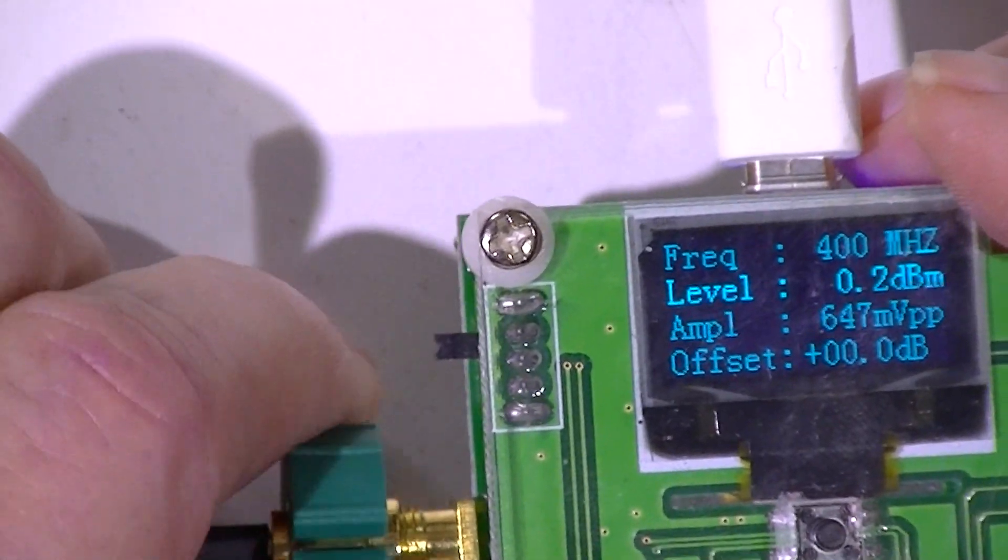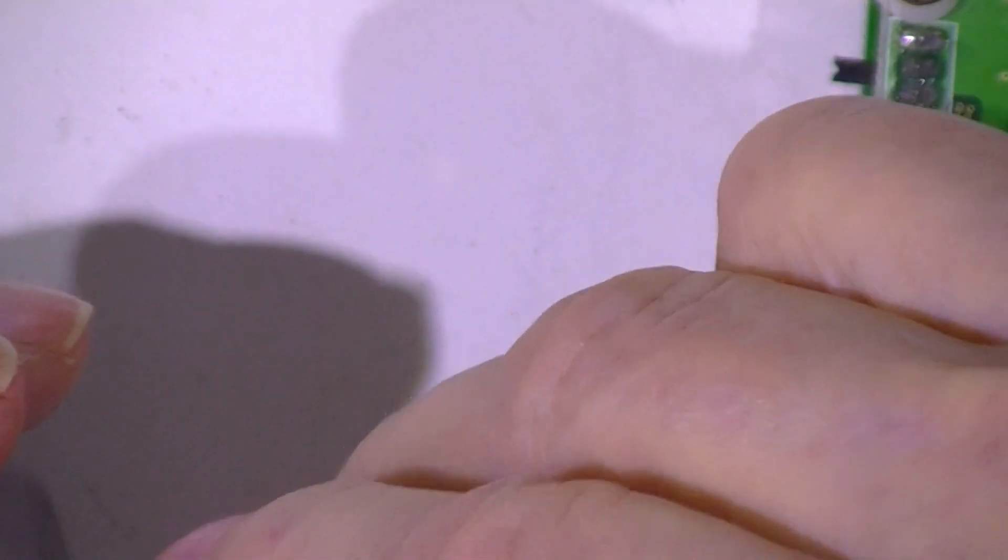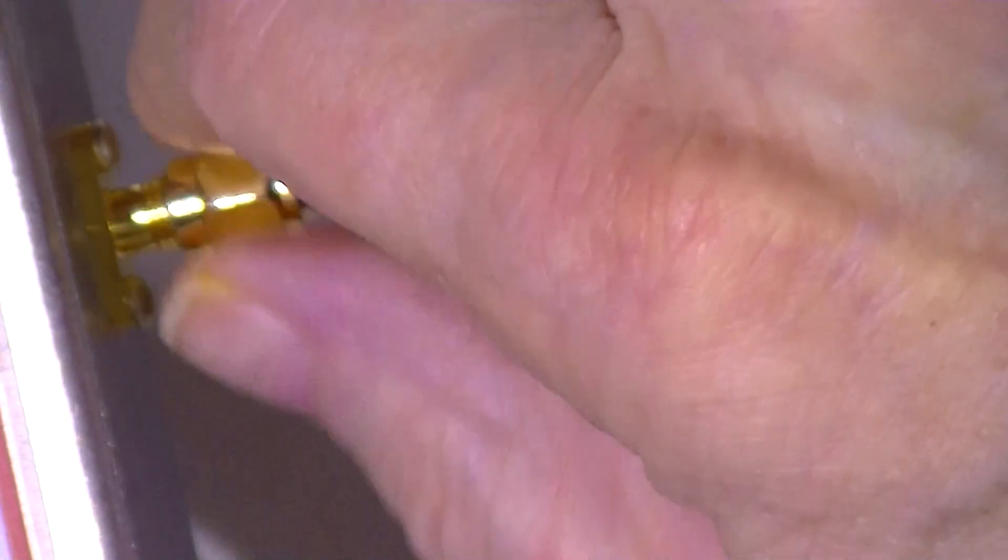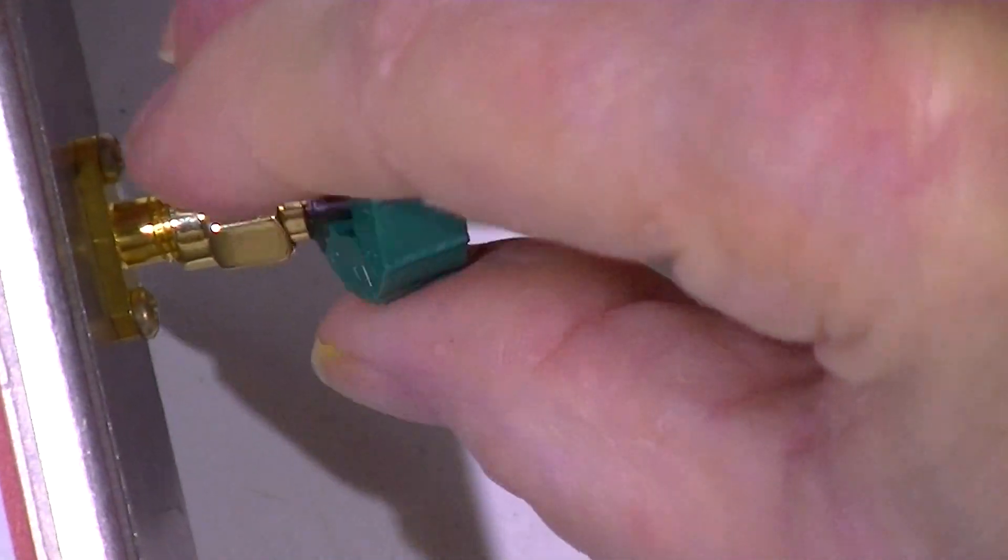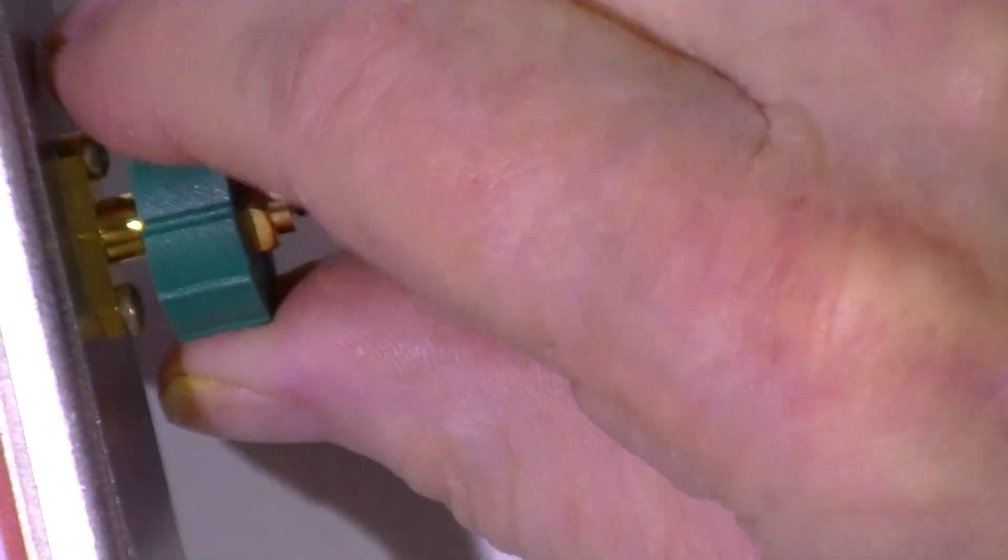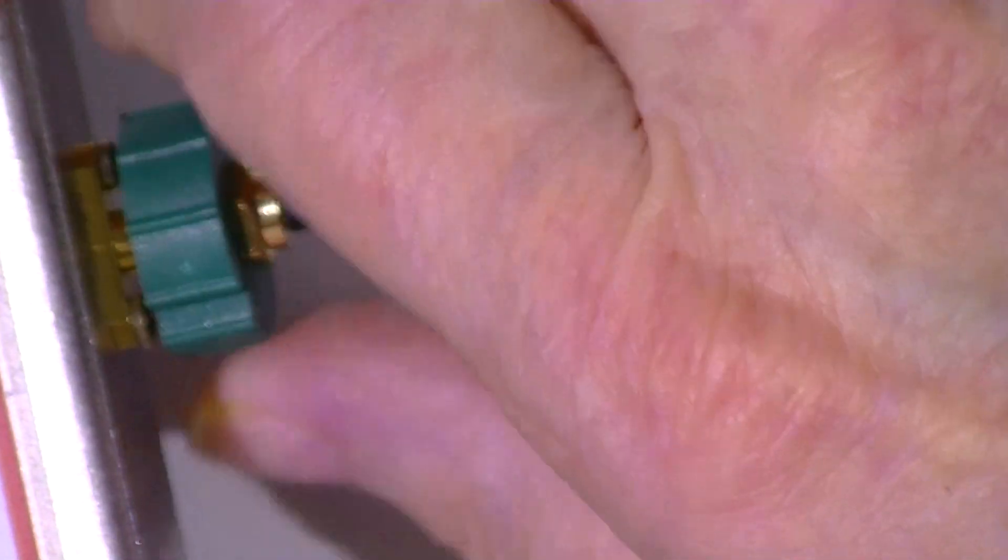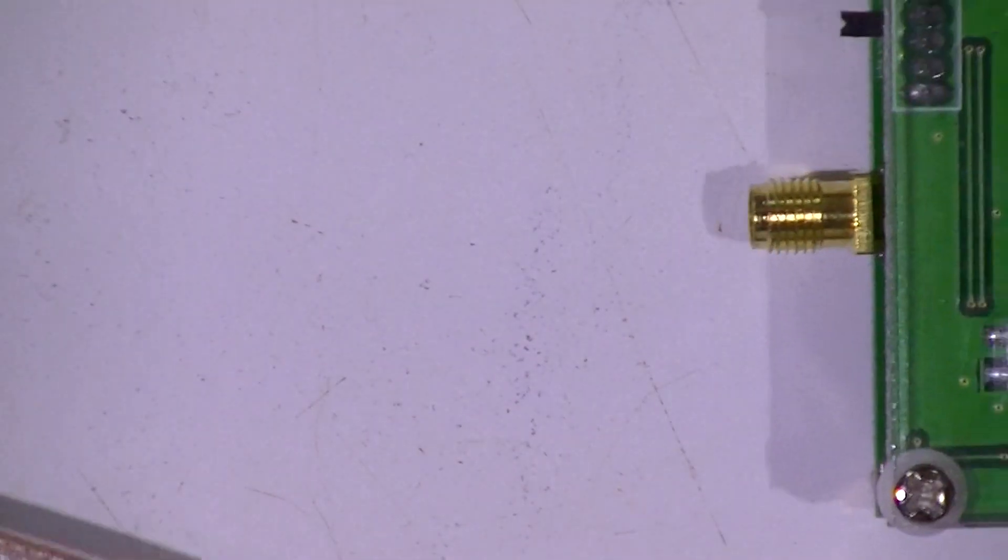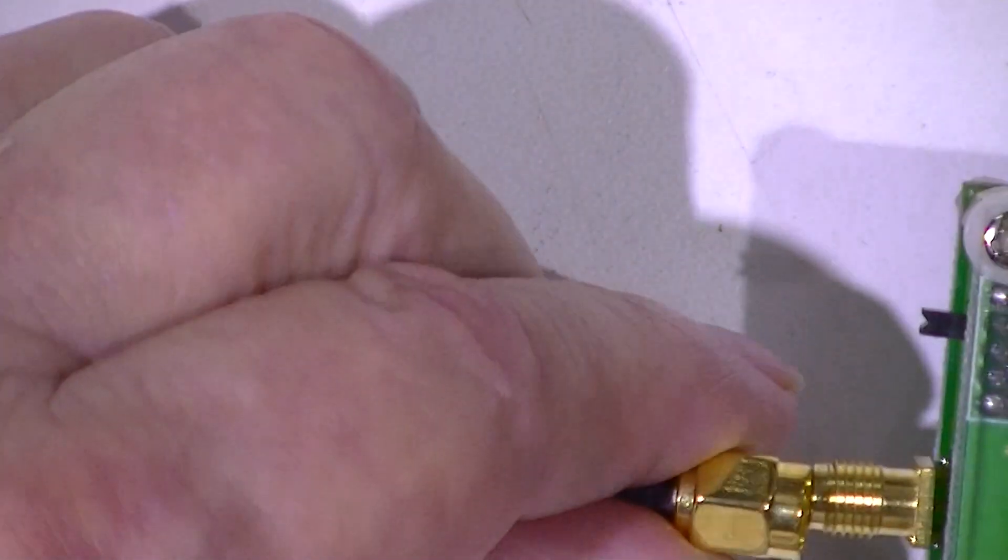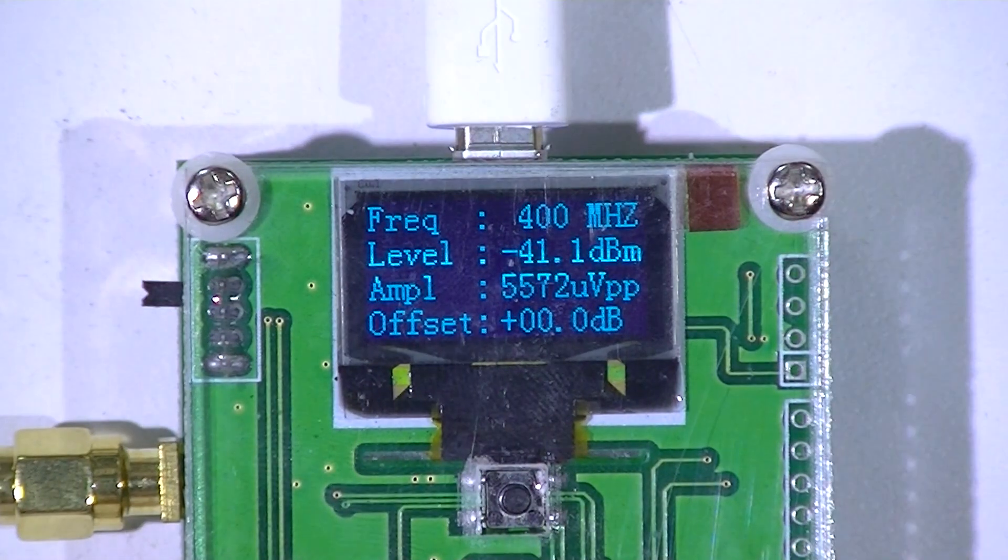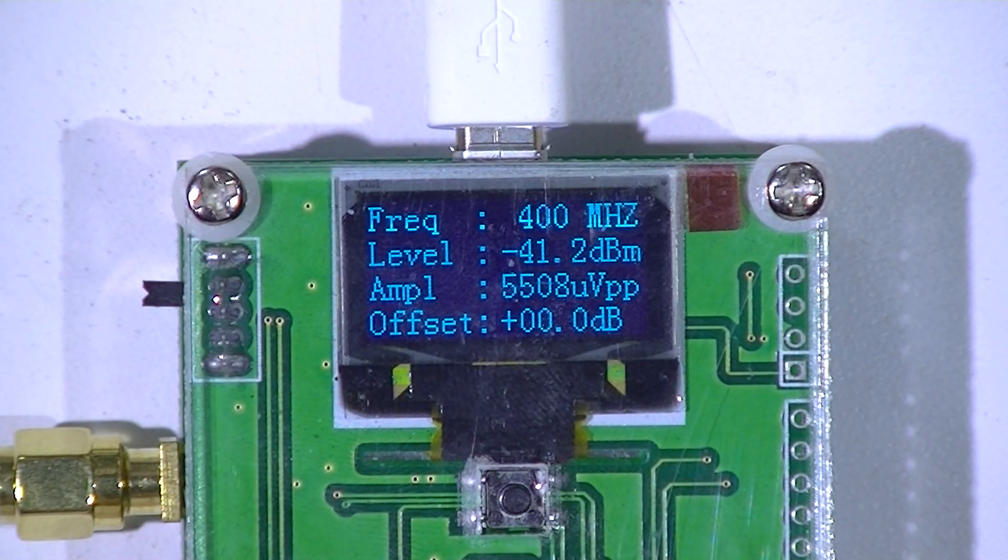I'll again redo it so that the 40 dB tap is installed. So the attenuation at 400 megahertz is closer to 41 dB.